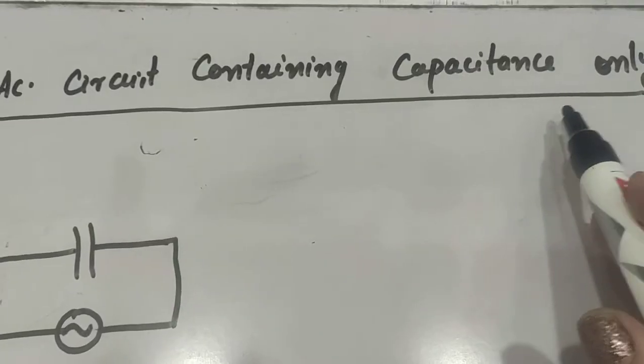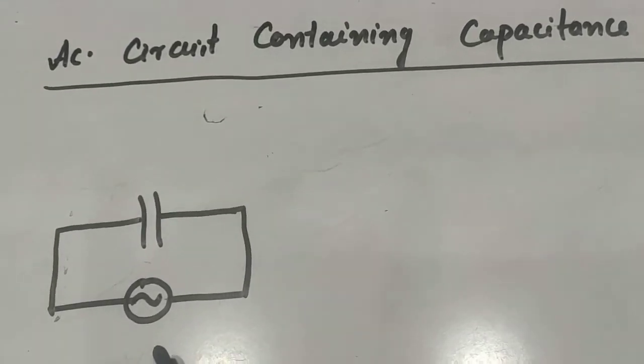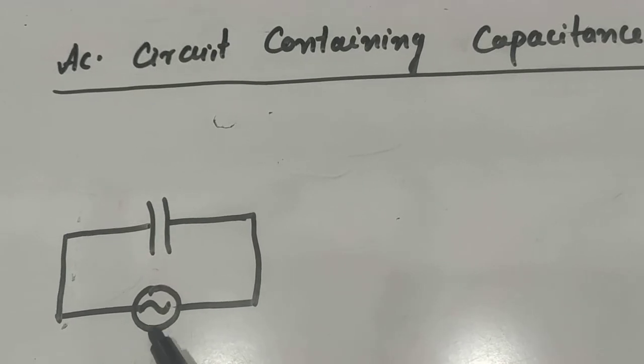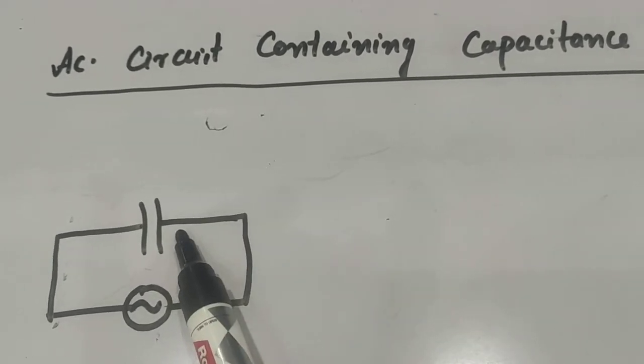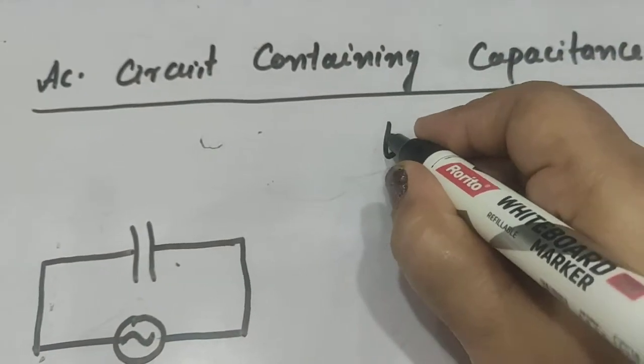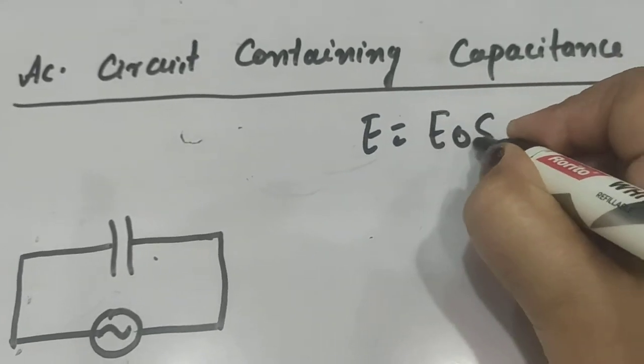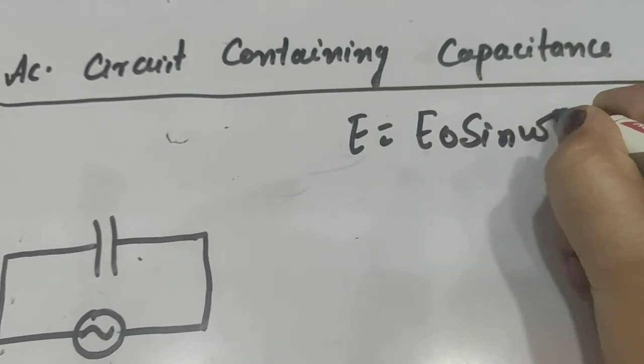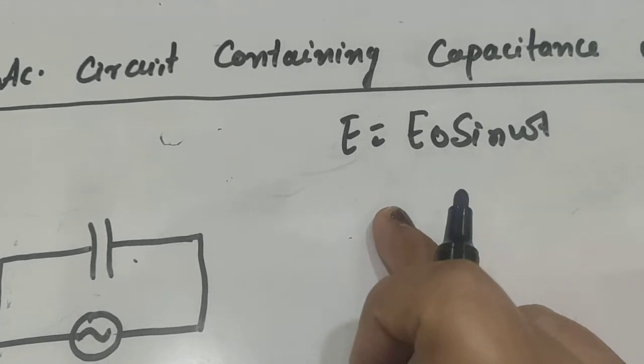AC circuit containing capacitance only. Now let us consider a source of alternating EMF is connected to a capacitor. Again, EMF induced E is given by E₀ sin(ωt). Now this voltage supplied to the circuit...